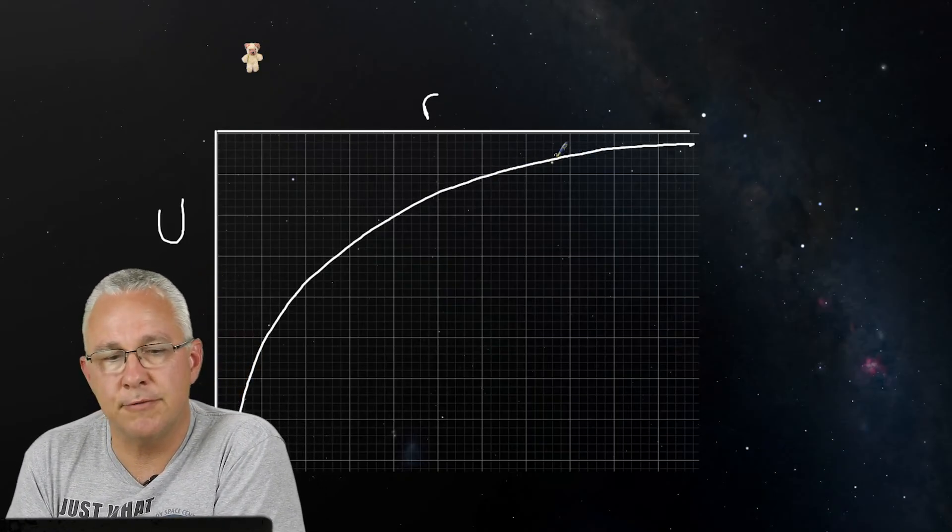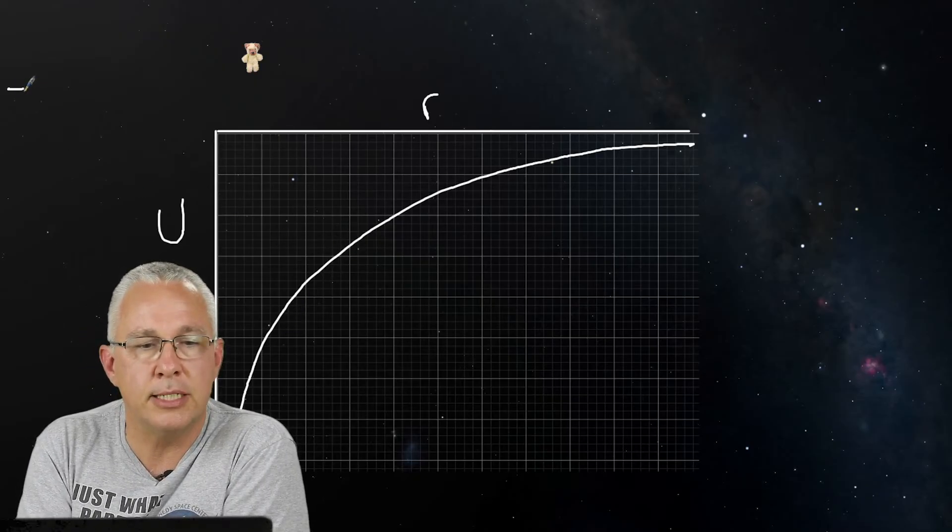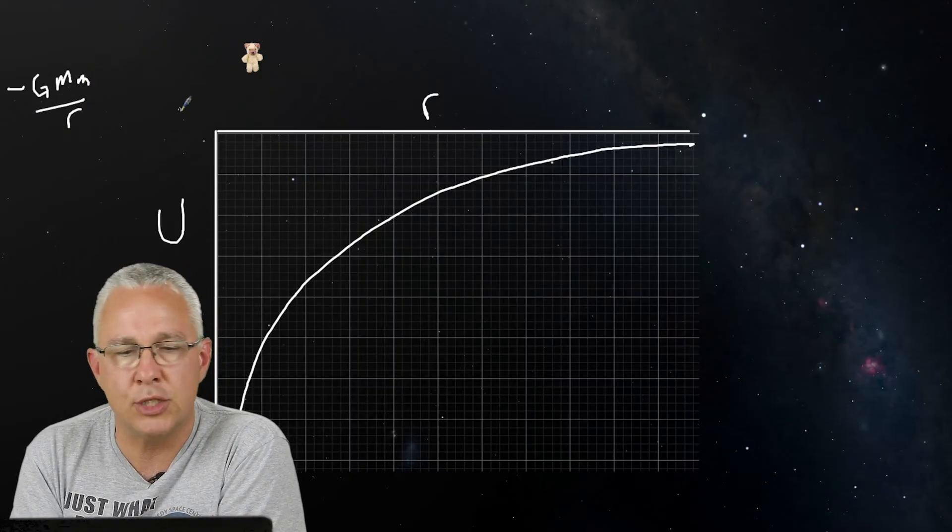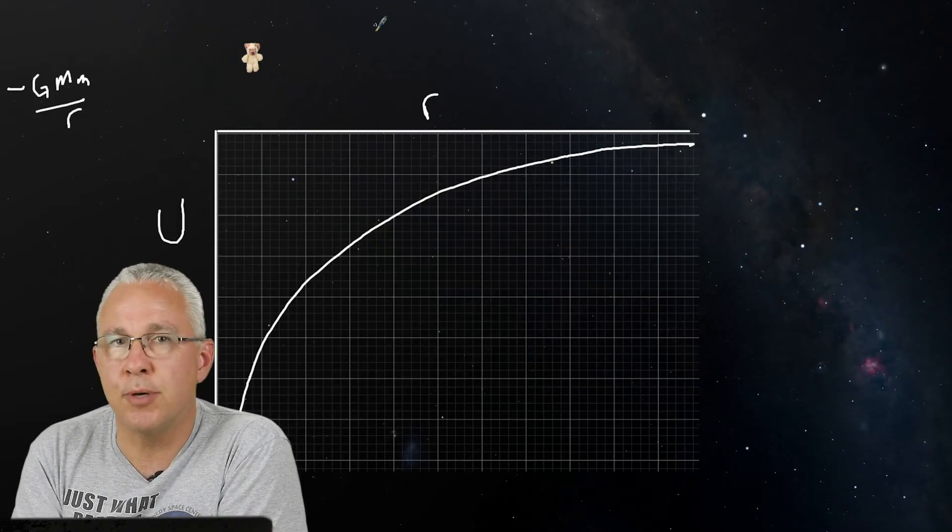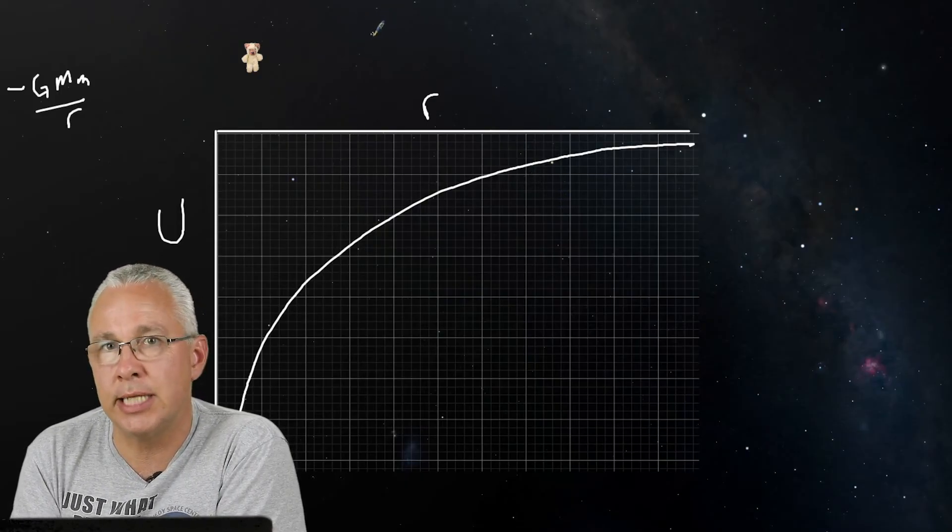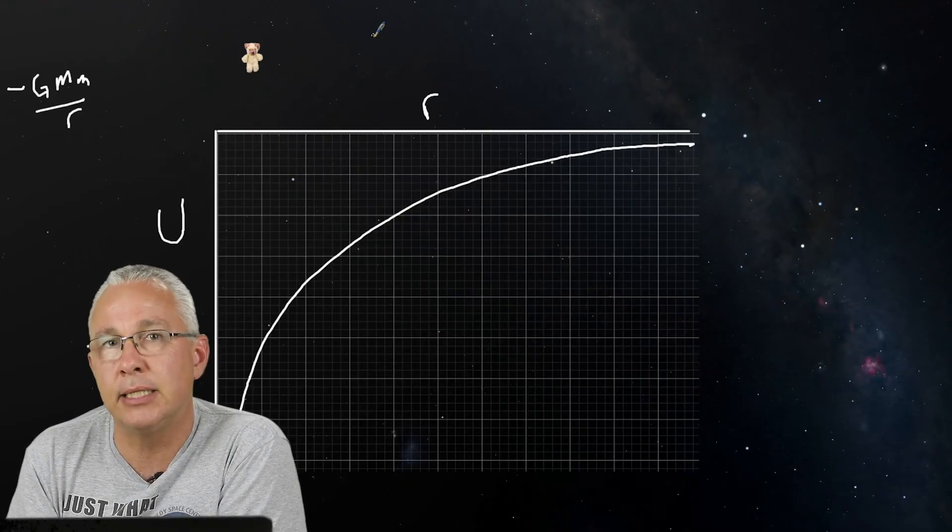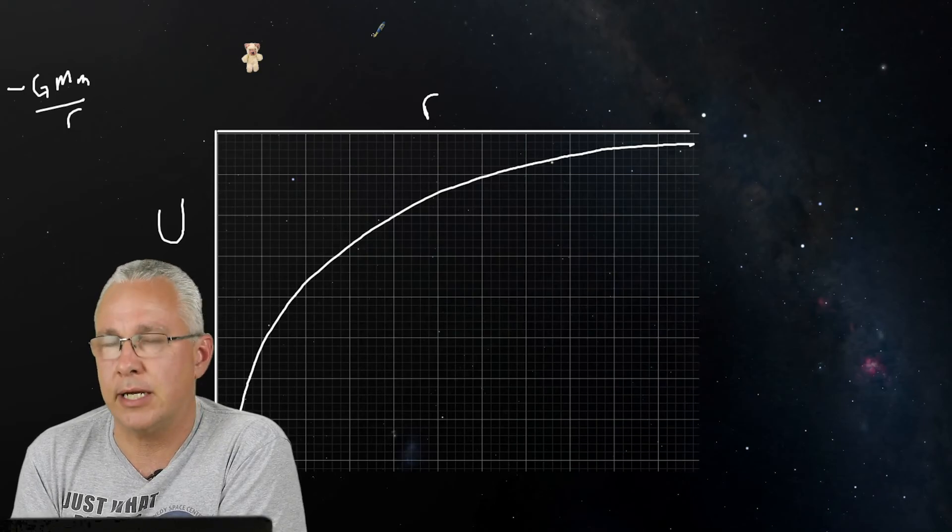You'll notice a couple of things. First of all, this is an inverse relationship. Why? Because our formula is negative GMm over r. It's an inverse relationship. Secondly, it's always negative. There's no positive gravitational energy. It's always negative. Why? Again, because we've established infinity being the zero value. It doesn't have to be that way, but it makes sense for our definition.